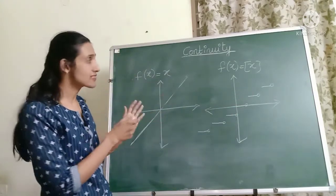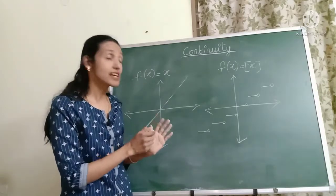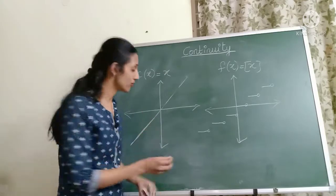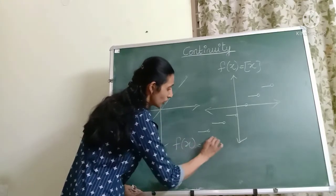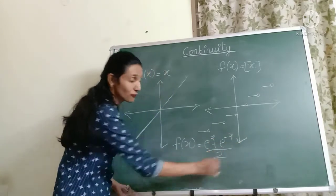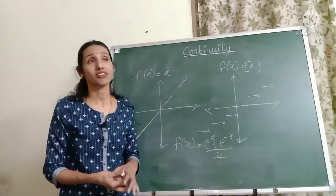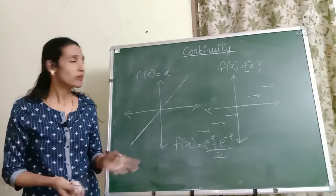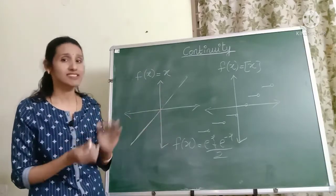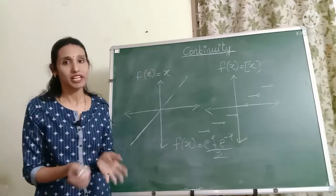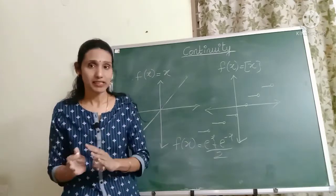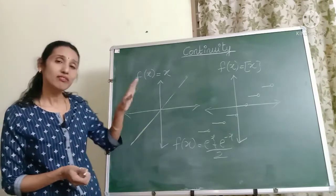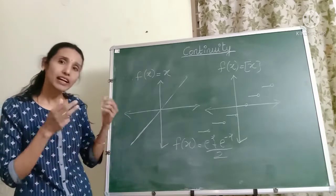By looking at the graph, you can say whether the function is continuous, where it is continuous, and where it is discontinuous. But if I give you a complicated function like f(x) = (e^x + e^(-x))/2, or a log function, or a trigonometric or a big polynomial function, it will be time consuming to plot the graph and then check if it's continuous. So we have another method — a numerical method — using which we can find out if the given function is continuous at any given point.